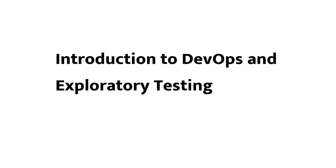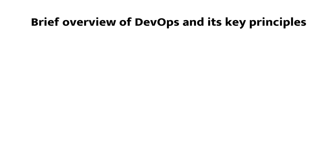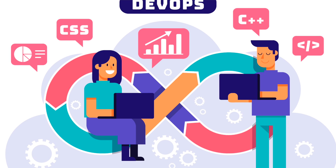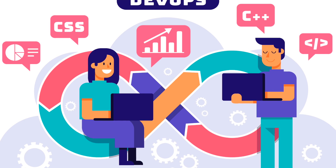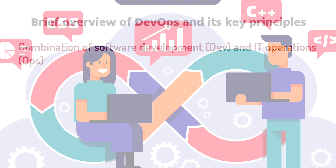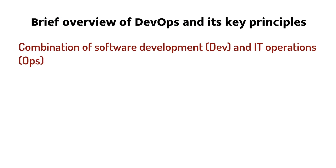First of all, let's have the introduction of DevOps and what is exploratory testing. DevOps is a set of practices that combines software development (Dev) and IT operations (Ops) to deliver high quality software more efficiently. The key principles of DevOps include collaboration, automation, continuous delivery, and continuous improvement.